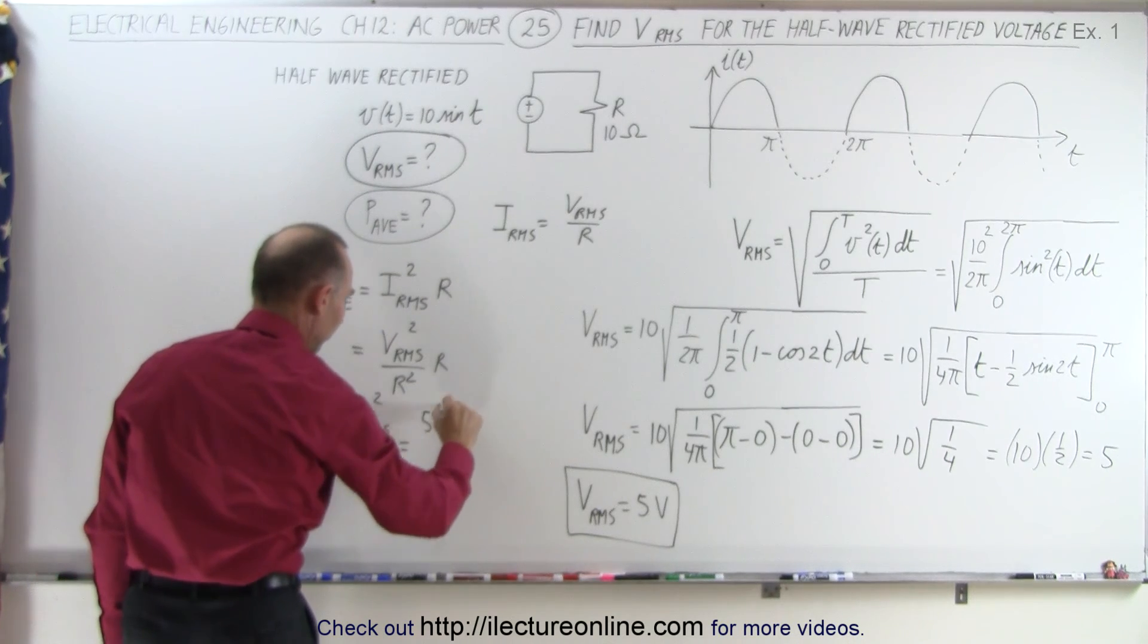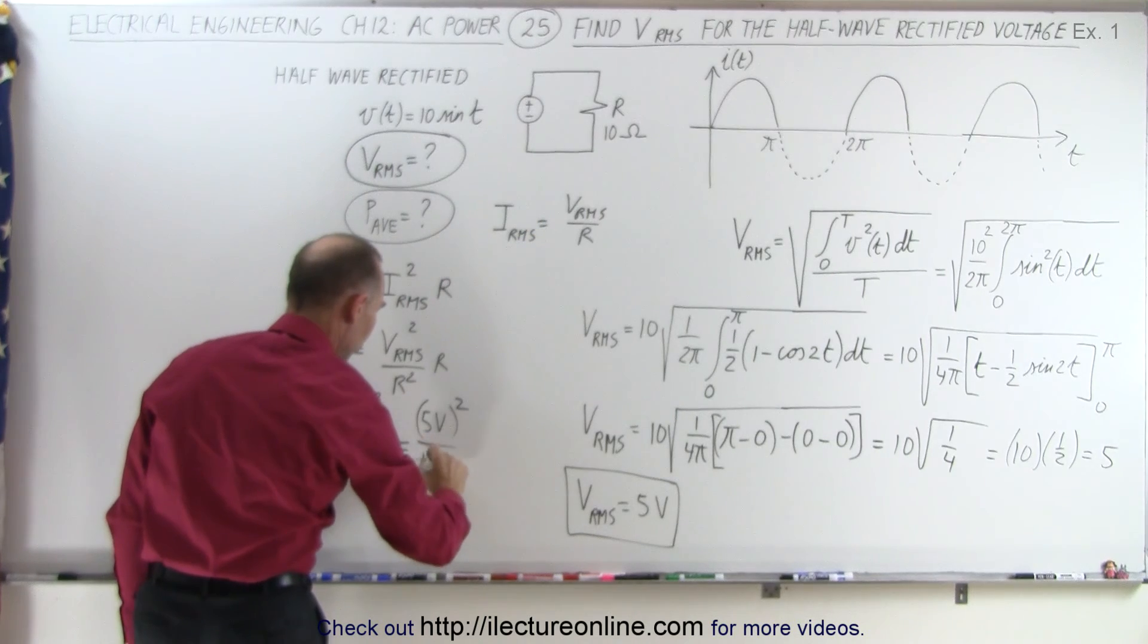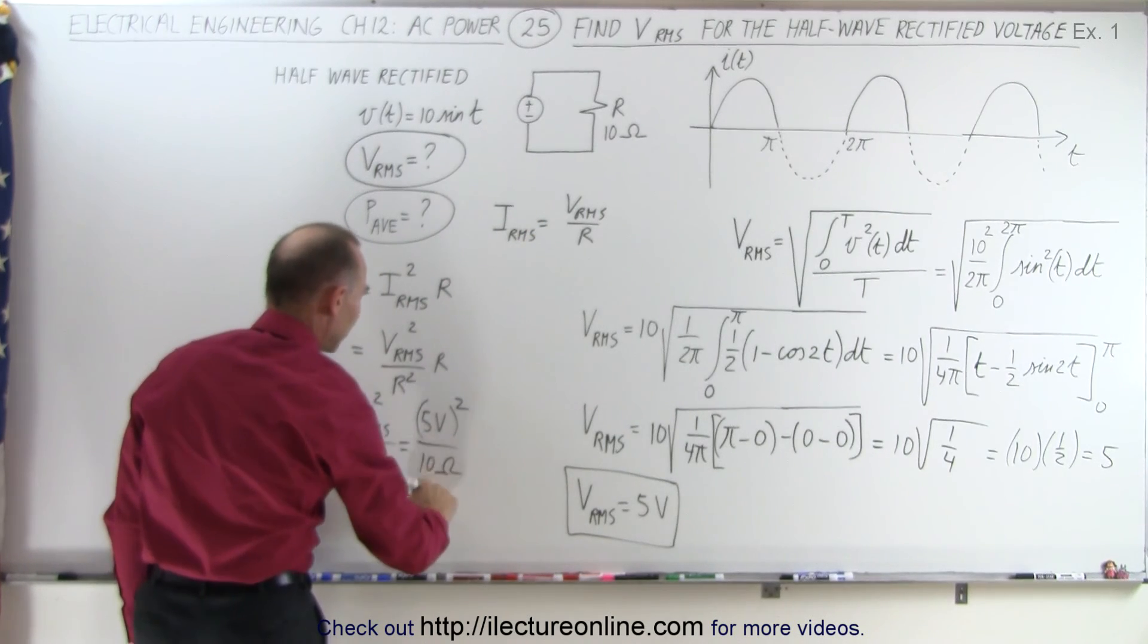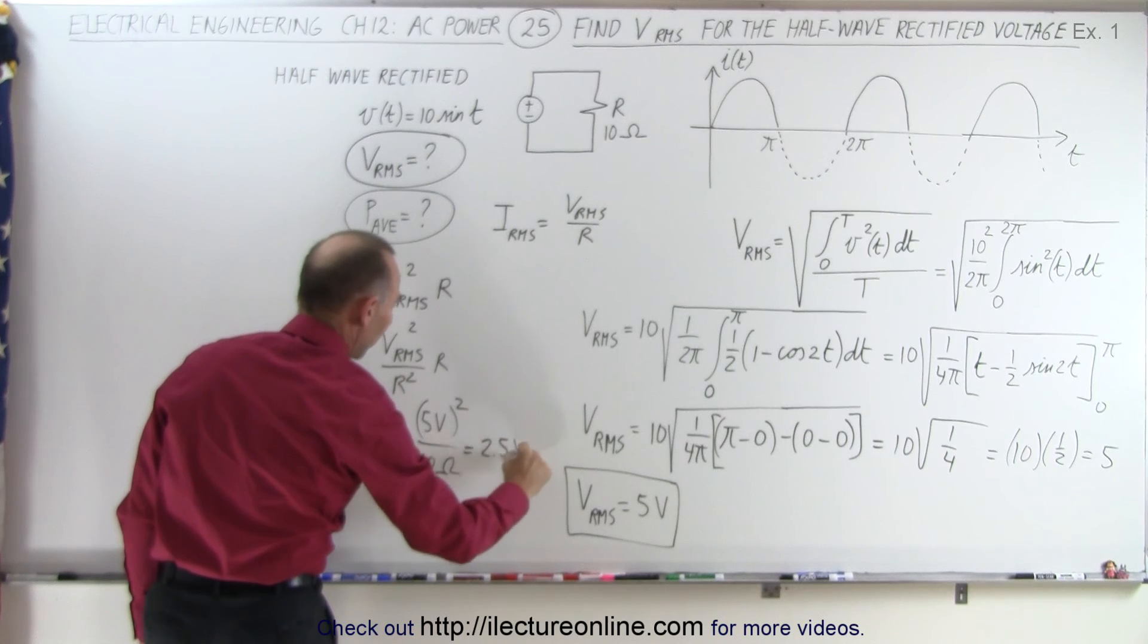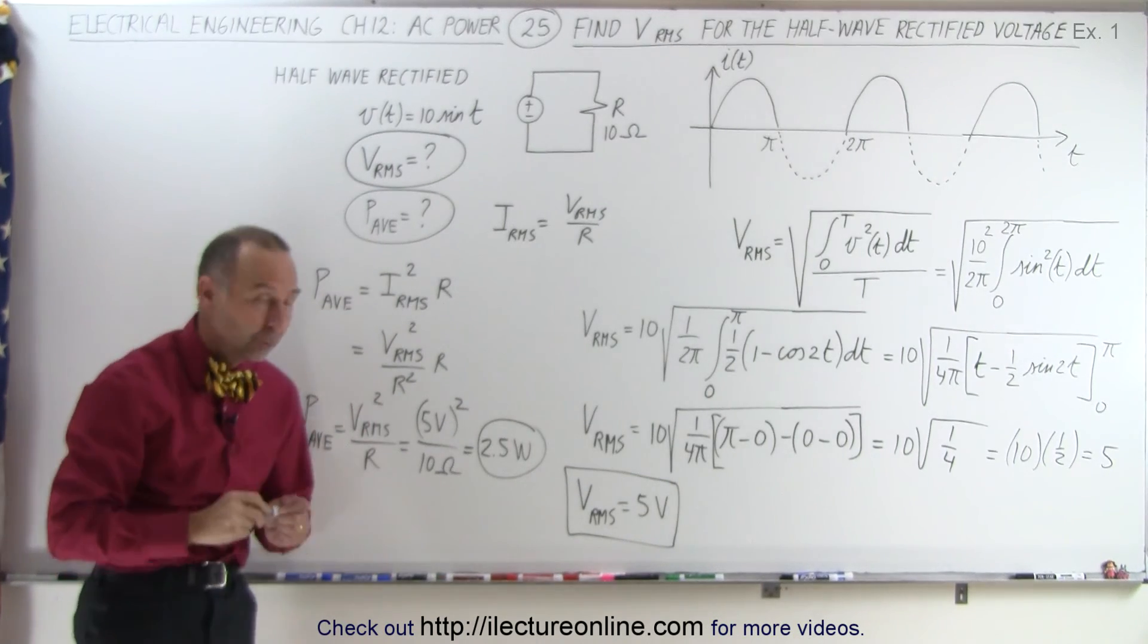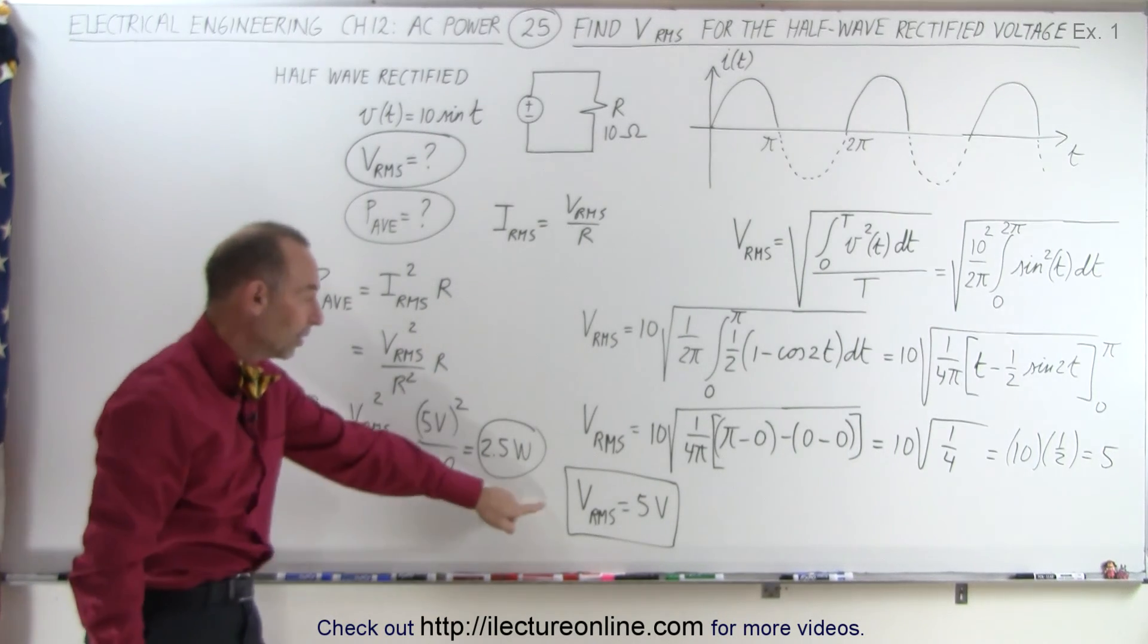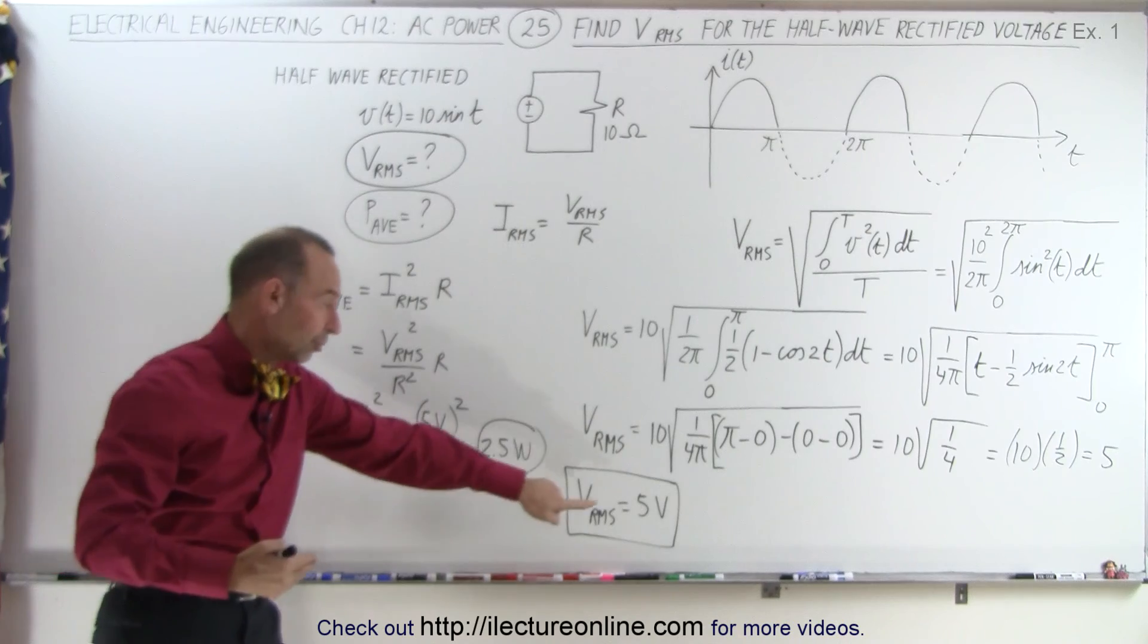So in this case, the VRMS was 5 volts. We square that divided by the resistance in the circuit, which is 10 ohms, 25 divided by 10, which is equal to 2.5 watts. And so the average power delivered to the resistor in the circuit is 2.5 watts. That's accomplished by having an RMS voltage or effective voltage of 5 volts.